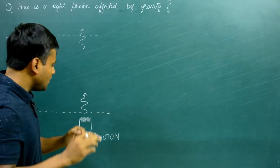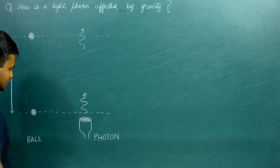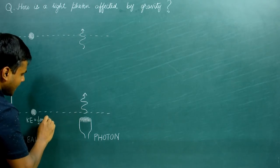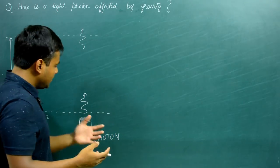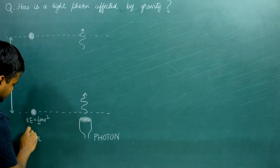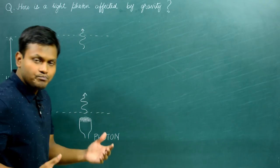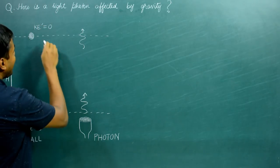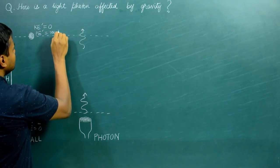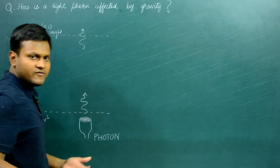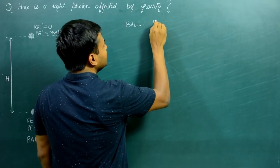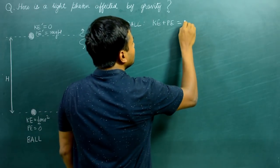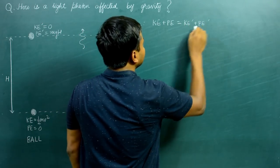To do that, let's first look at a simple case of the ball. If you have a ball here which has some mass and I give it a push — some kinetic energy — the kinetic energy of the ball is ½mv². I also specify that this height is my reference, where I define the potential energy as zero. The ball moves upward and reaches a particular height H, where the new kinetic energy KE' is equal to zero and the new potential energy in the gravitational field is MgH. Applying the energy conservation principle: KE + PE = KE' + PE'.